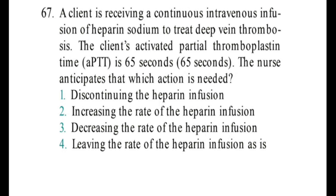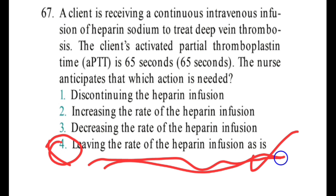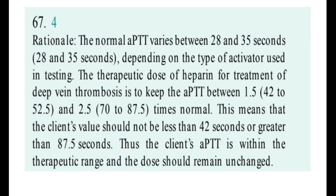The right option is 4 — leave the rate of heparin infusion as it is; no change is needed. The rationale: the normal APTT range is 28 to 35 seconds. However, if a therapeutic dose of heparin is continuing for the treatment of DVT, the APTT level also changes according to the dose. At 1.5 times the dose, APTT can vary from 42 to 52; at 2.5 times the dose, it can range 72 to 87 seconds.